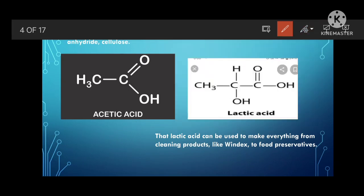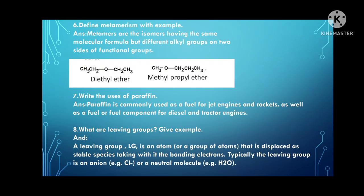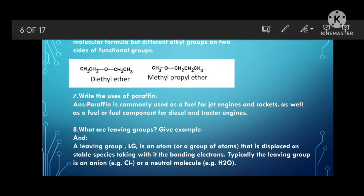Define metamers with example. Metamers are isomers having the same molecular formula but different alkyl groups on two sides of the functional group. Example: diethyl ether and methylpropyl ether have the same molecular formula, but the attachment of the alkyl group to the functional group is different — here one carbon is attached, there two carbons, there three carbons. This different attachment of alkyl groups to the functional group is known as metamerism.